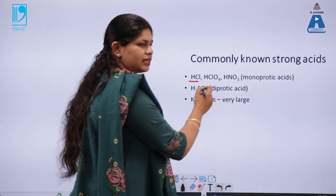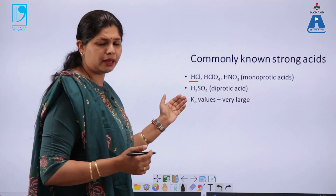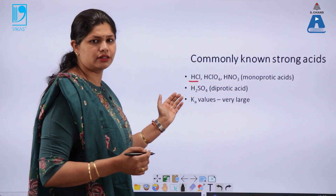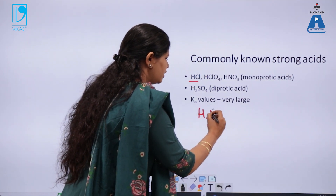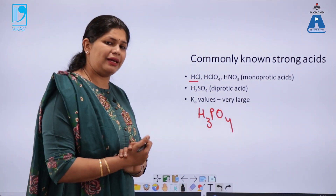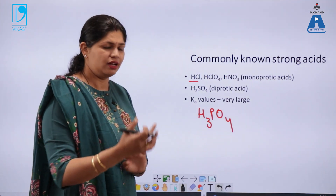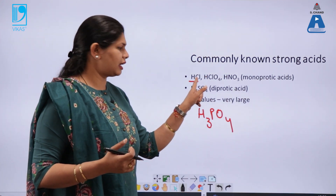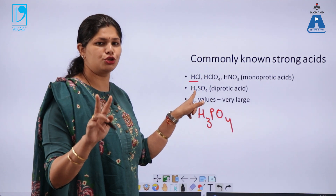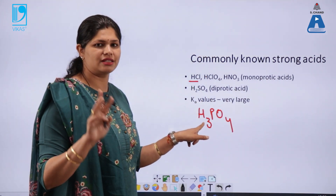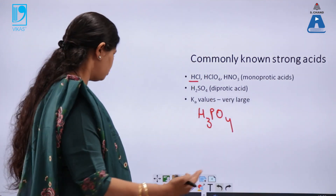Commonly known strong acids include hydrochloric acid, nitric acid, and HClO₄. Sulfuric acid is a diprotic acid; phosphoric acid is a triprotic acid. The basicity of an acid depends on how many H⁺ ions it can liberate: a monoprotic acid liberates one H⁺, a diprotic acid liberates two protons, and a triprotic acid liberates three protons — that is how we determine the basicity of an acid.